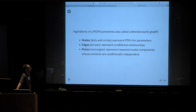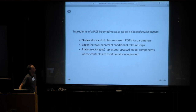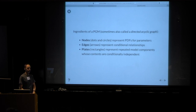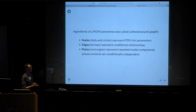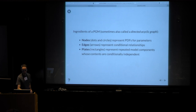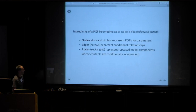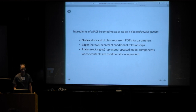Ingredients of a PGM — also called a directed acyclic graph. Three main ingredients: nodes (dots and circles) represent parameters and probability distributions associated with those parameters; edges (arrows) represent links between parameters and conditional relationships; and plates (rectangles subsuming some nodes) indicate model components that are repeated in a conditionally independent way.